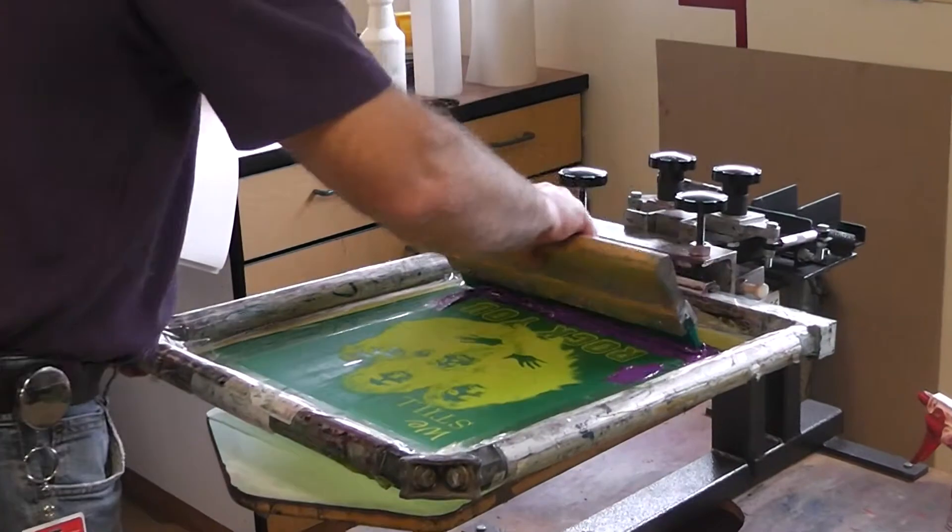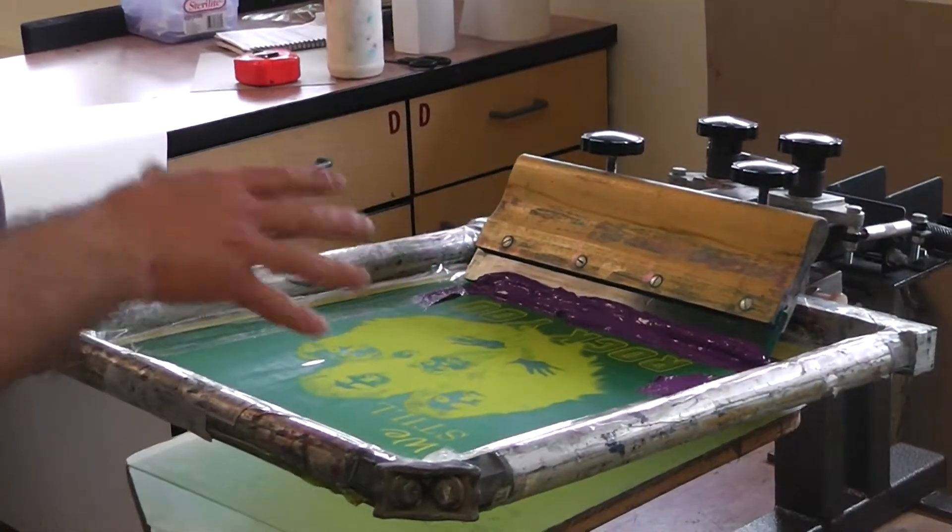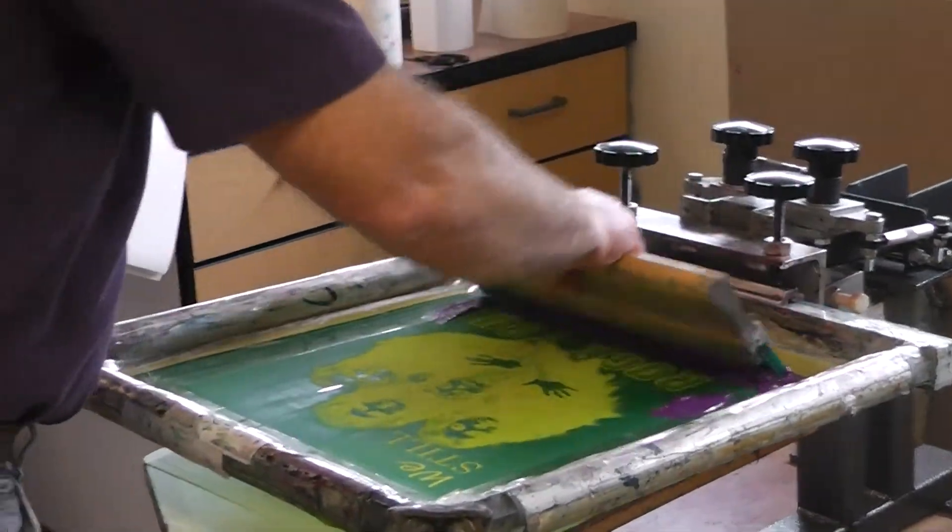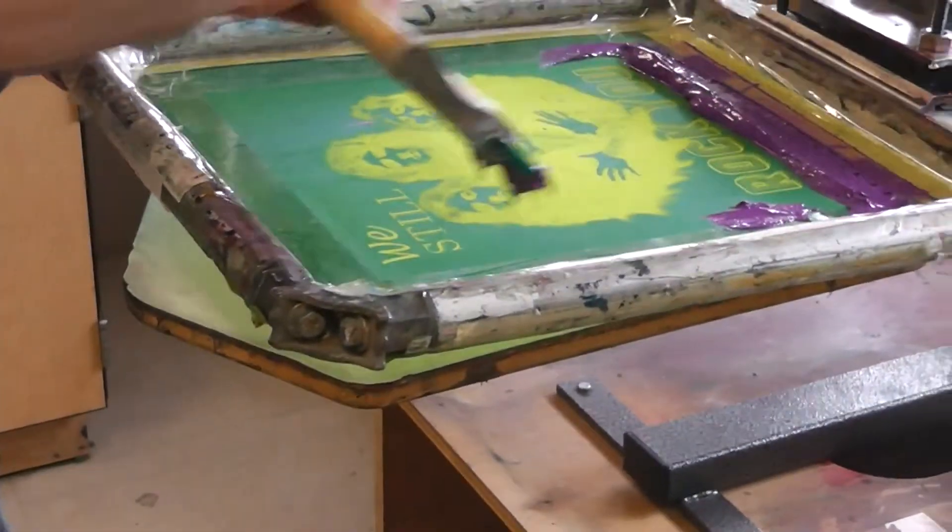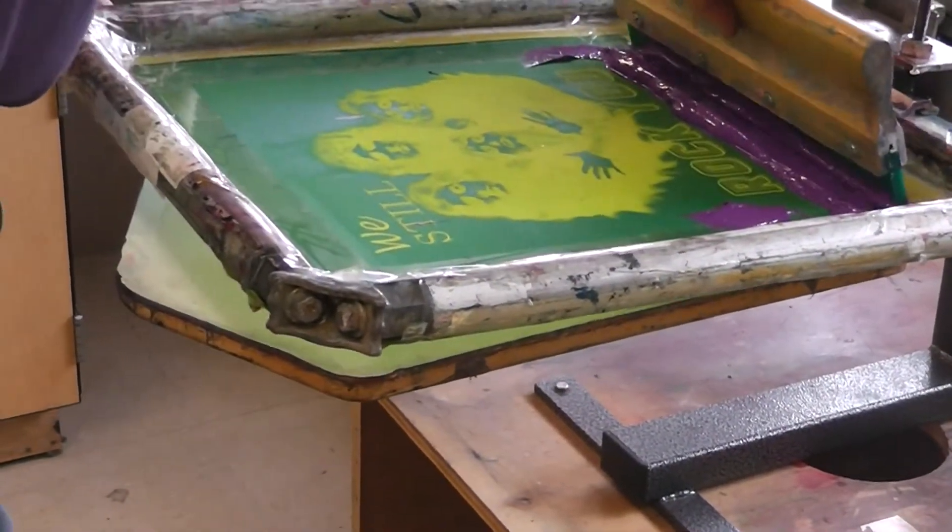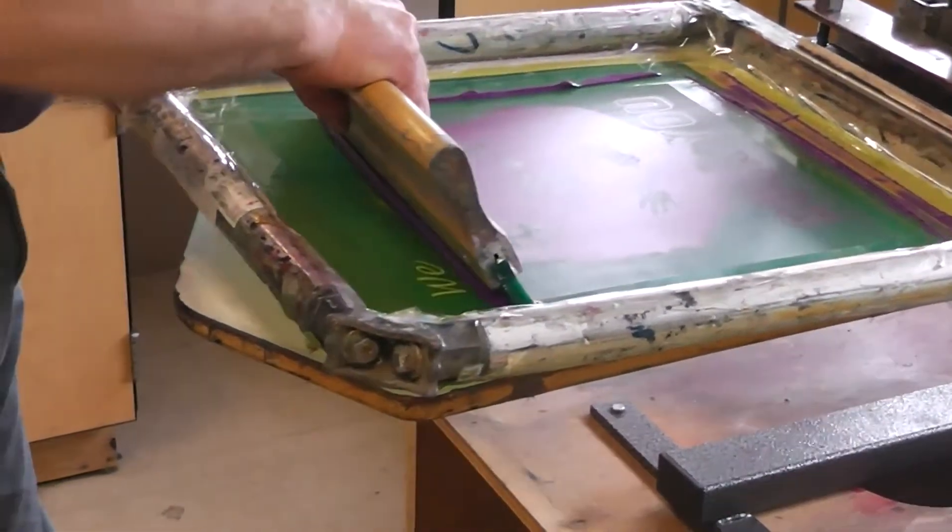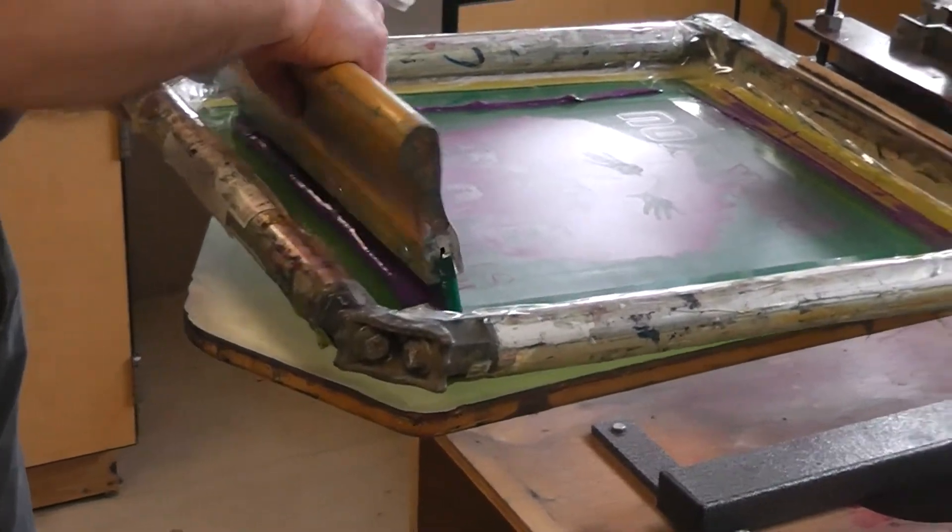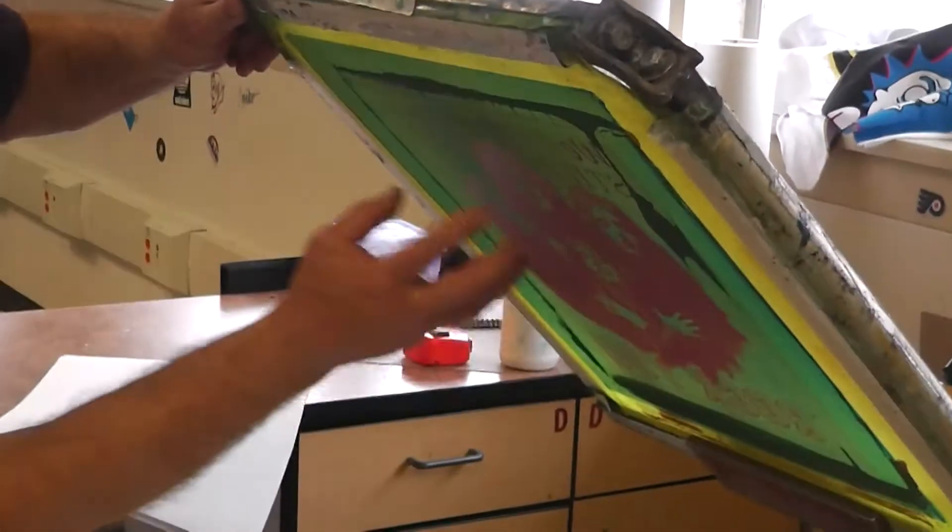Now, the photo stencil is very durable and strong. We did not print this way that we're going to demonstrate to you on the paper stencil. But we're going to do what's called a flood stroke. So normally the flood stroke happens in this direction, but I don't have ink there yet. So I'm going to flood pulling the squeegee towards me.